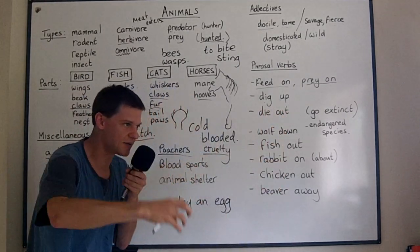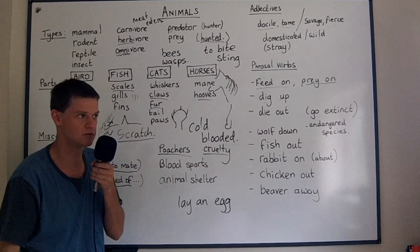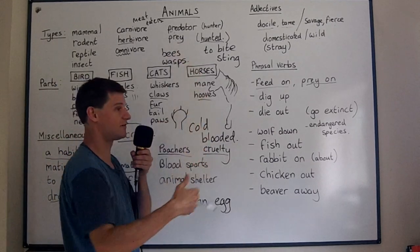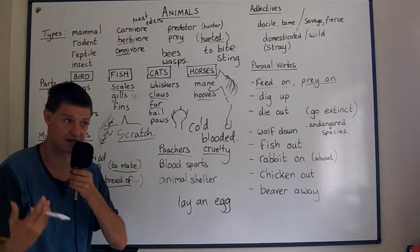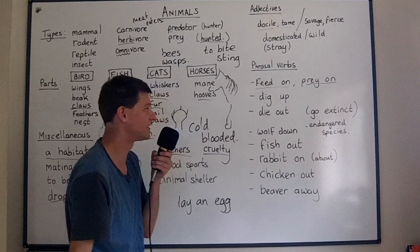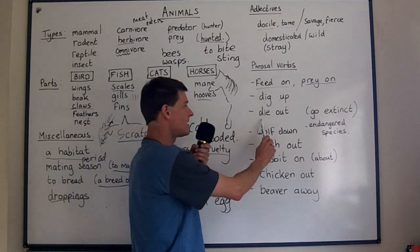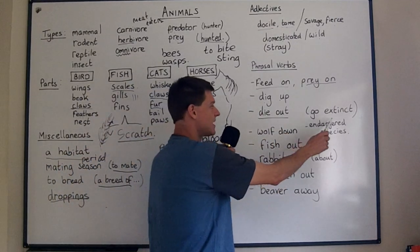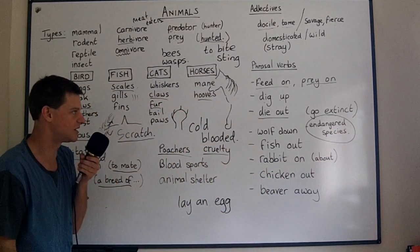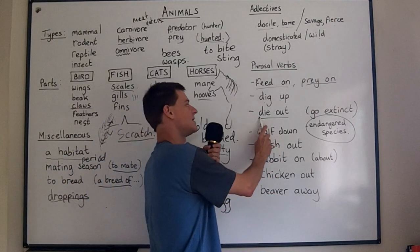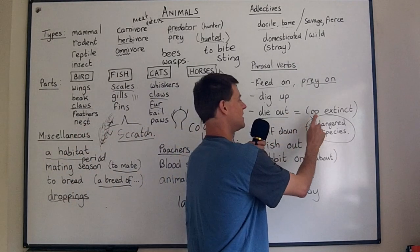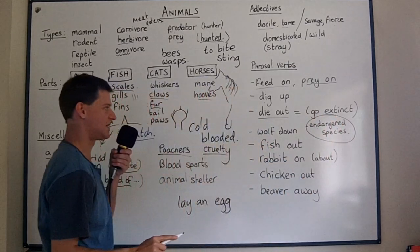Dig up means an animal finds something in the ground — some animals dig up their prey, or they might dig up worms in order to feed on them. Animals can also die out — when an animal is an endangered species, like the tiger, people worry it may die out in 50 years, which is the same as going extinct.